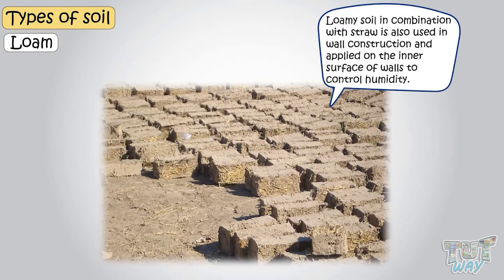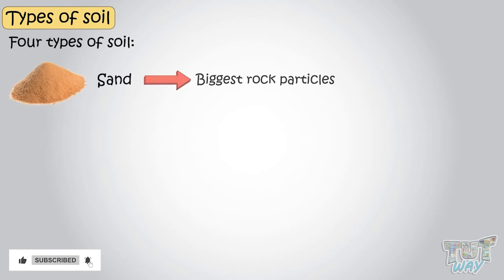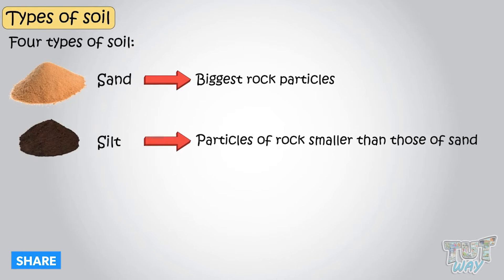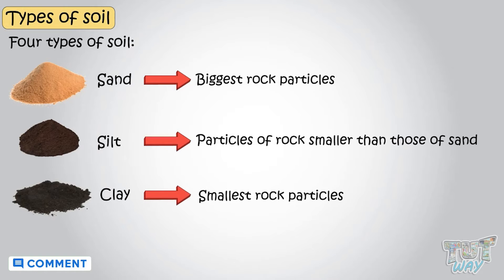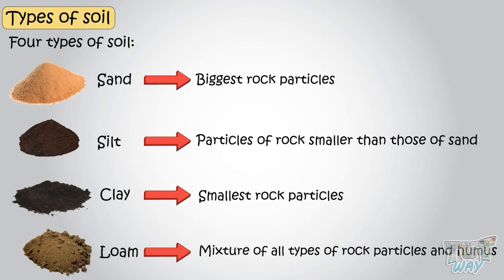Now, let's revise what we have learned about types of soils. We learned about four types of soil: sand, which has the biggest rock particles; silt, which has particles of rock smaller than those of sand; clay, which has the smallest rock particles; and loam, which is the mixture of all types of rock particles and humus.